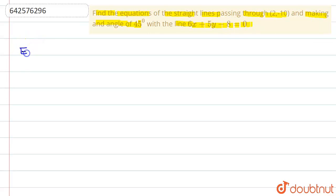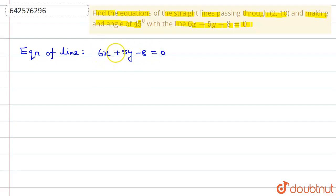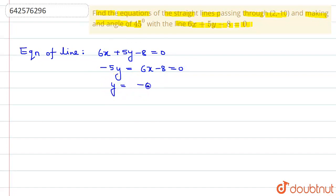We have given that the equation of the line is 6x + 5y - 8 = 0. If we simplify it into slope-intercept form, that will be y = -6/5 · x + 8/5. Comparing with y = mx + c, the slope m = -6/5.